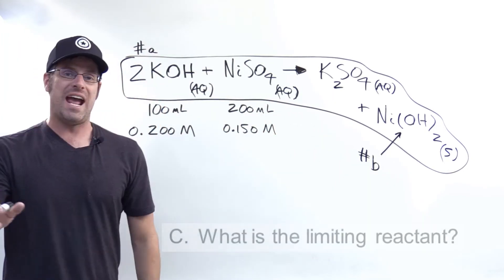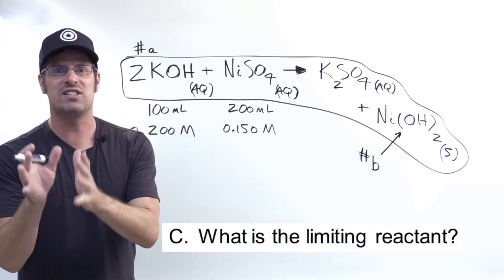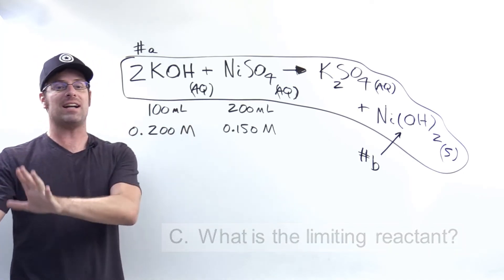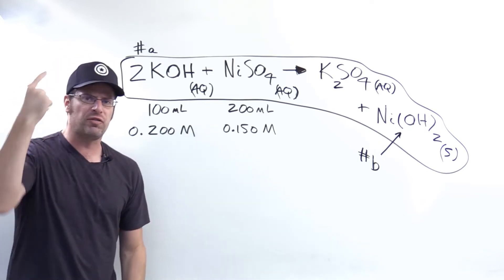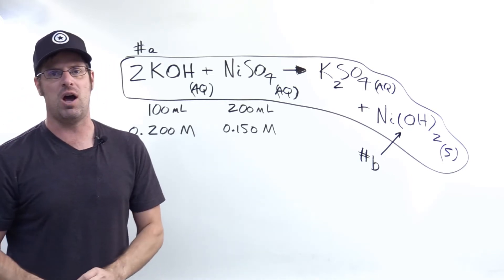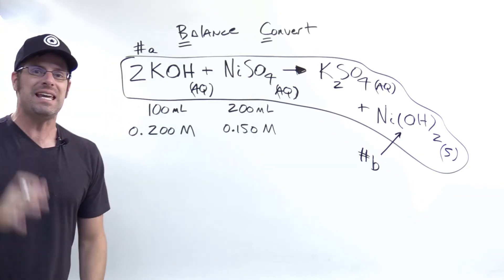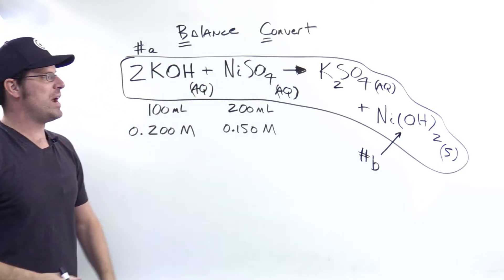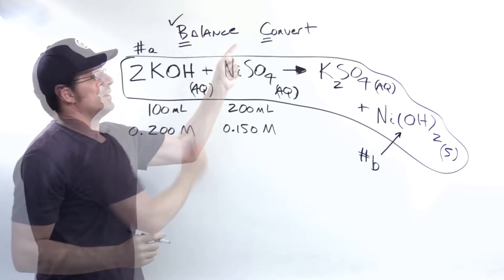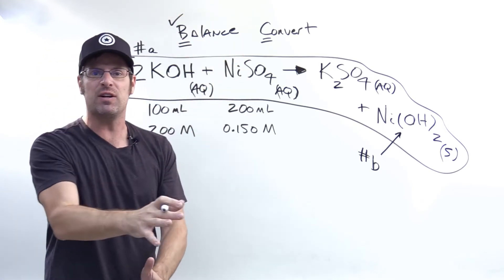Now we're on to part C, which asks us in this situation, what is the limiting reactant? For that, we held back to limiting reactant concepts from an earlier chapter. Specifically, I'm going to use my mnemonic BCD, where the letter B stands for balance the chemical equation. We're finished with that, so I'll put a check. The letter C stands for convert everything to moles.